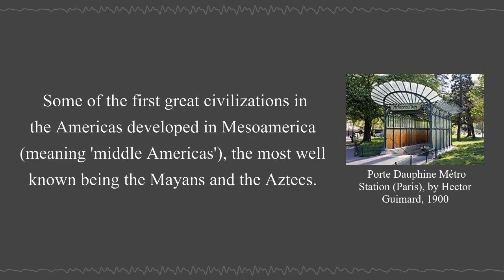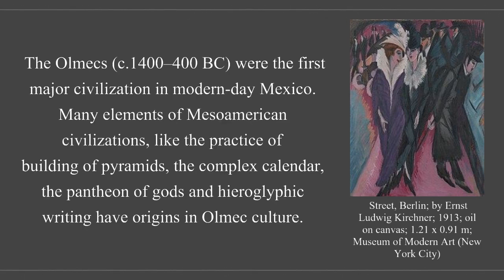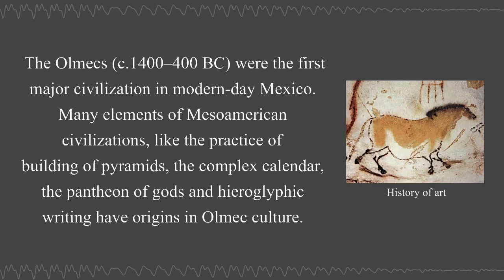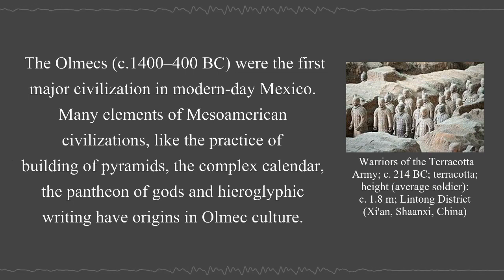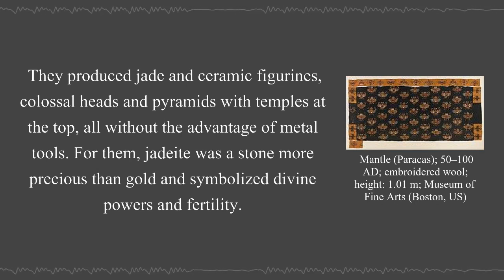Some of the first great civilizations in the Americas developed in Mesoamerica, the most well-known being the Mayans and the Aztecs. The Olmecs, circa 1400–400 BC, were the first major civilization in modern-day Mexico. Many elements of Mesoamerican civilizations, like the practice of building pyramids, the complex calendar, the pantheon of gods, and hieroglyphic writing have origins in Olmec culture. They produced jade and ceramic figurines, colossal heads and pyramids with temples at the top, all without the advantage of metal tools.